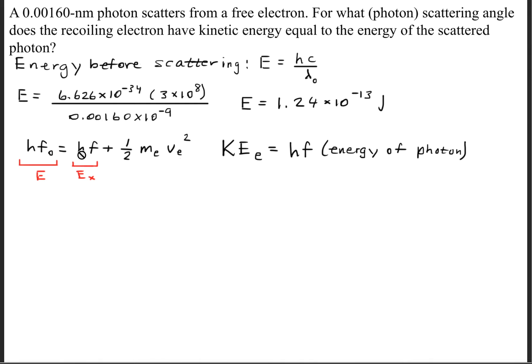What I'm going to do now is label some of the terms in this formula. So h times the initial frequency, we're going to call that E, and we already found E, which was 1.24 times 10 to the negative 13th joules. And this hf term, or the energy of a photon, we're going to call that the energy in the x direction.